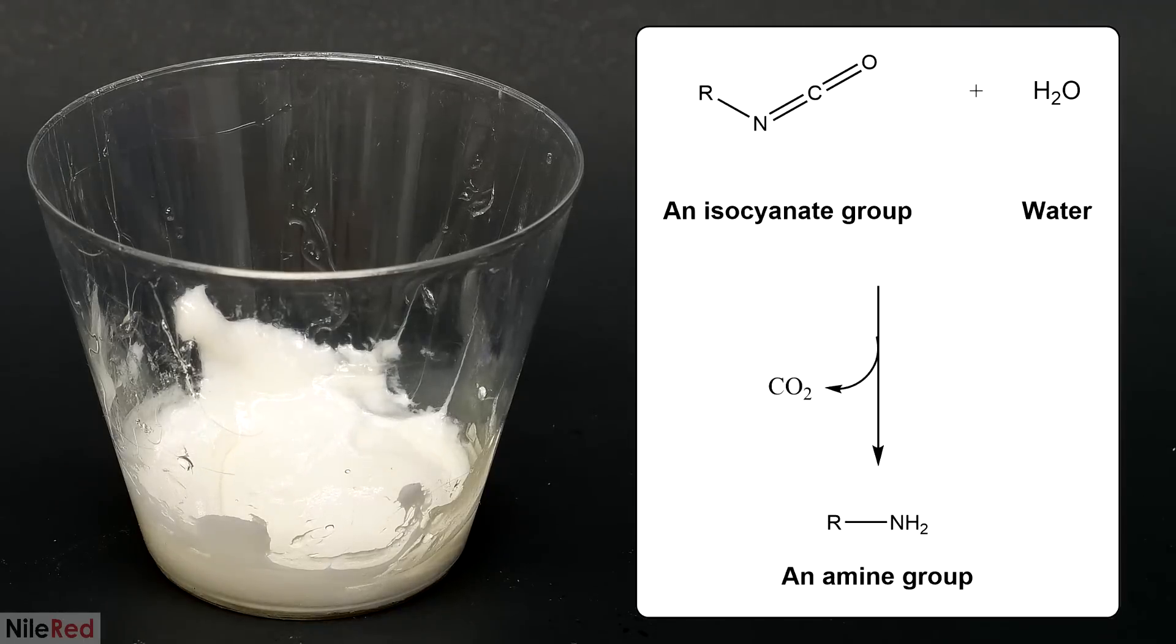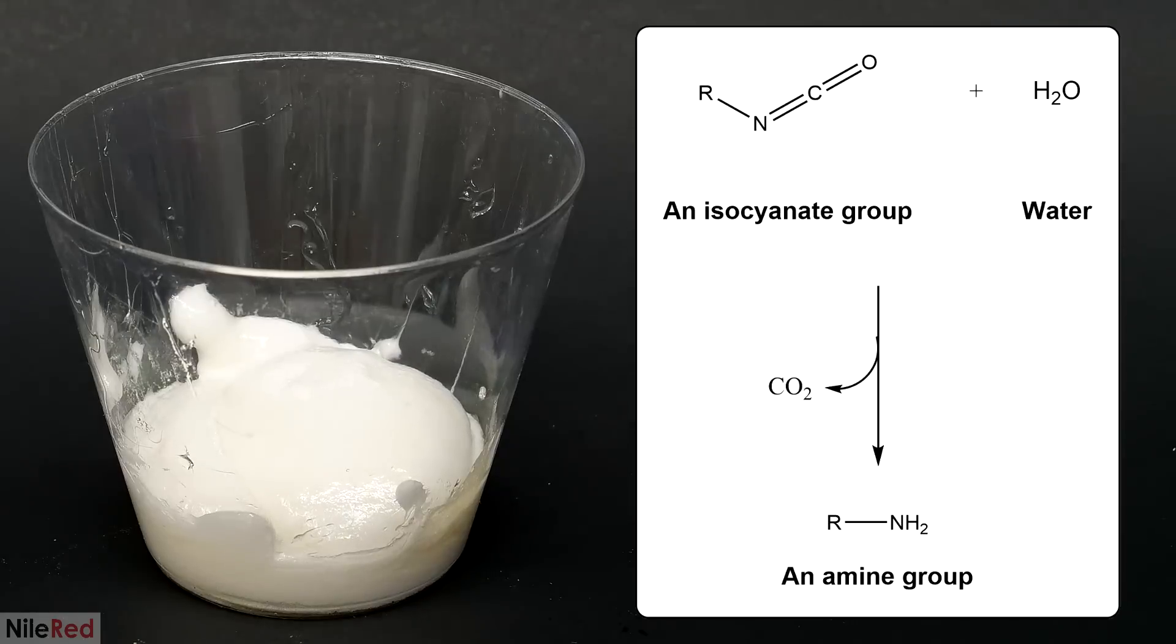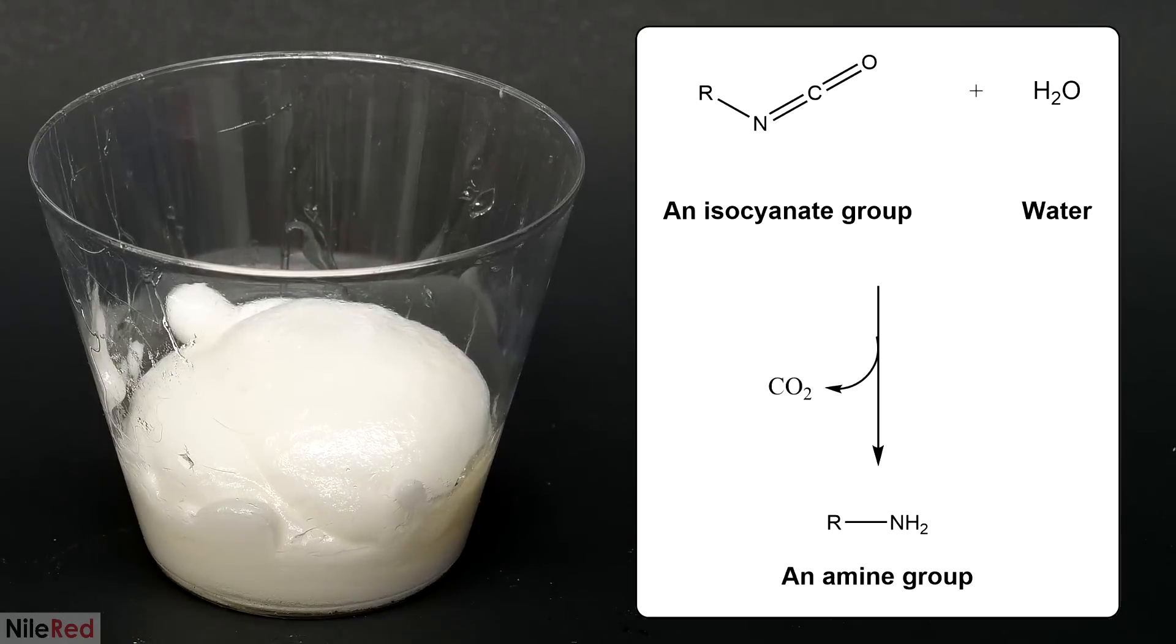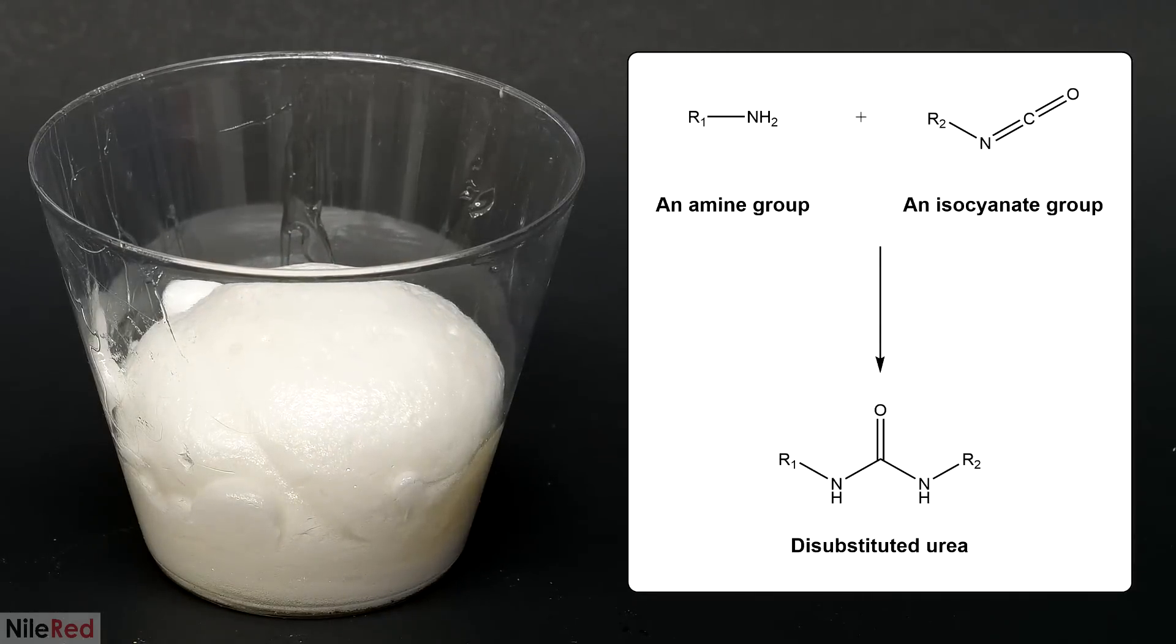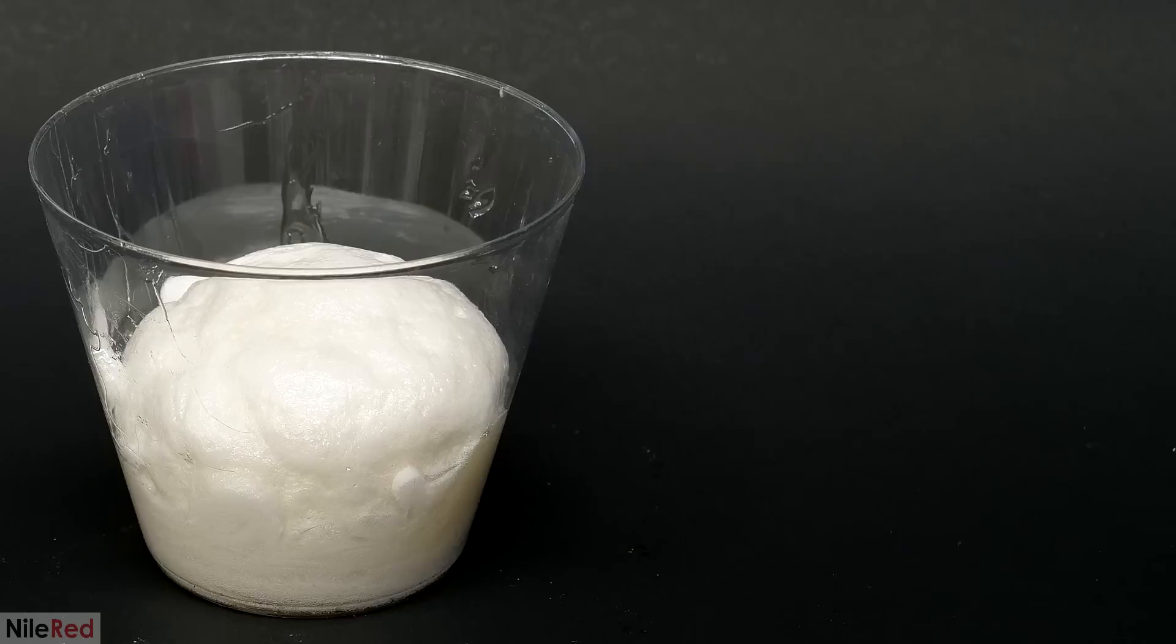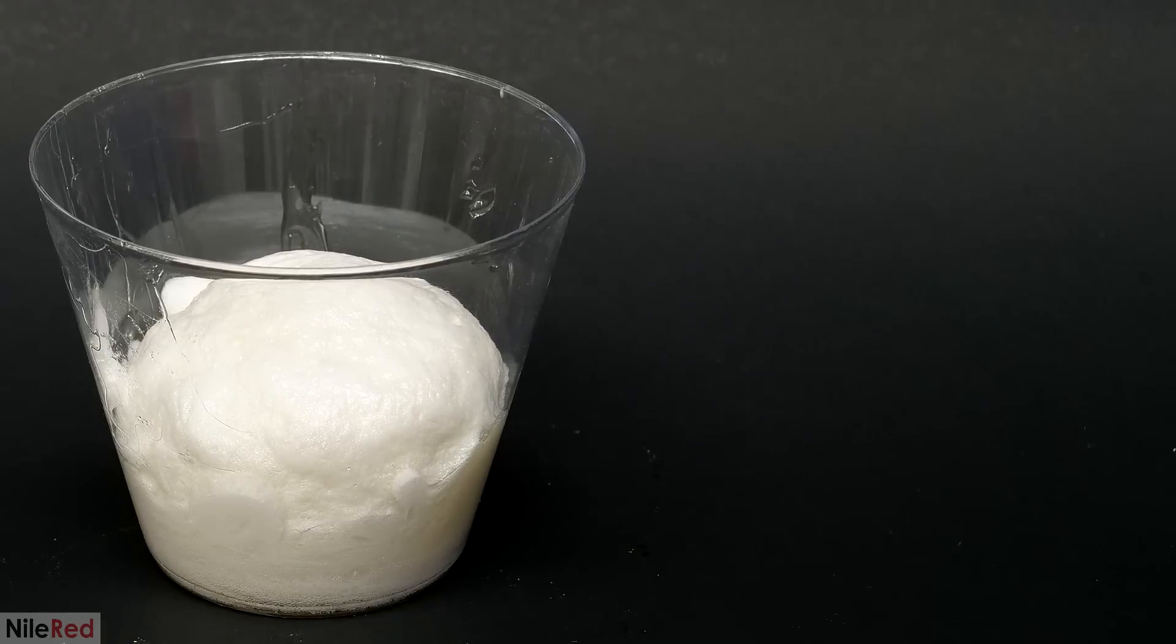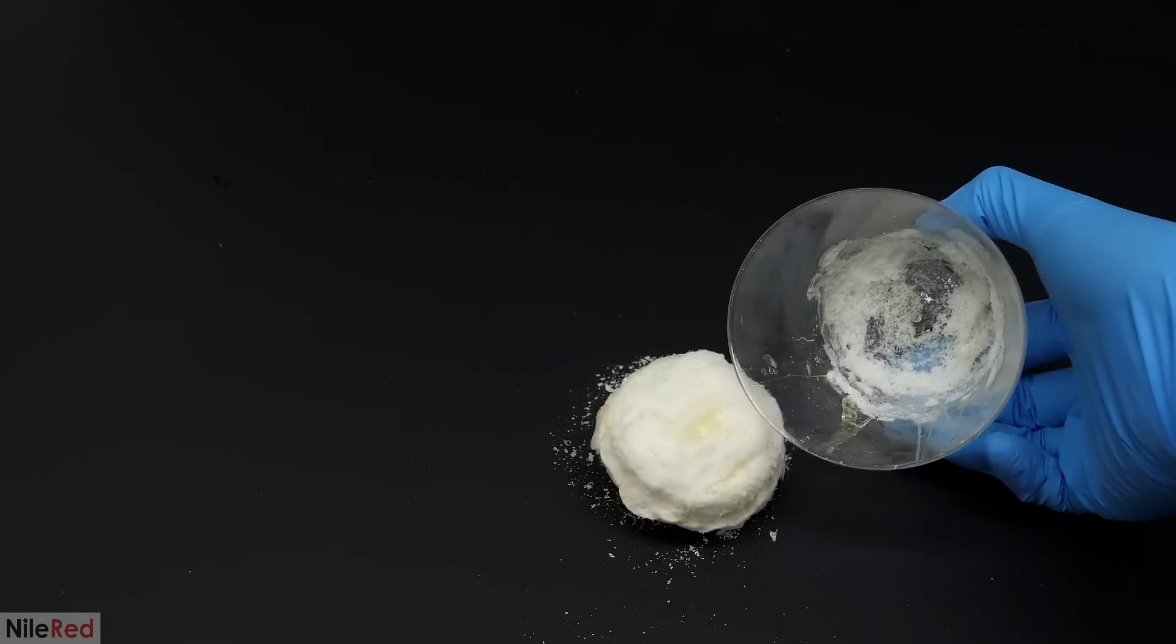The initial reaction was between water and some of the unreacted isocyanate groups which converted them to amines. It also produced CO2 gas which caused it to slowly puff up. These amines then went on to attack other isocyanates forming urea linkages. This caused the polymer chains to slowly increase in size and for it to eventually solidify. This combination of CO2 production and polymerization is how a lot of polyurethane foams are made. When it was done I thought it was going to be impossible to get out of the cup but it was actually quite easy.